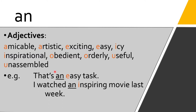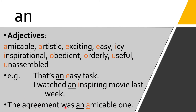Let's take a look at the examples. We have: 'That's an easy task.' Why did we use 'an' here? Because the word that follows begins with a vowel letter E. In another example: 'I watched an inspiring movie last week.' 'An' precedes a word that begins with vowel letter I. And another one: 'The agreement was an amicable one.' Amicable means friendly.